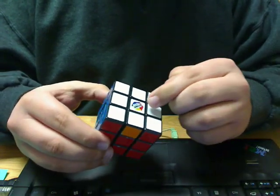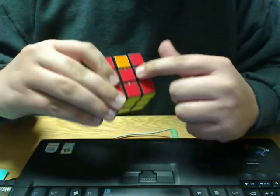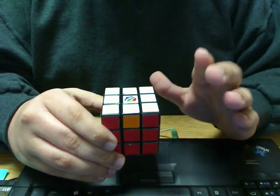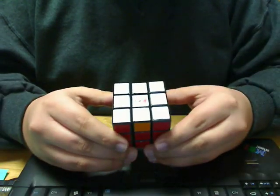So, on the 3x3, we are going to see these centers change. We're going to see them rotate. But on a Void Cube, they don't exist, so you're not going to be able to tell.